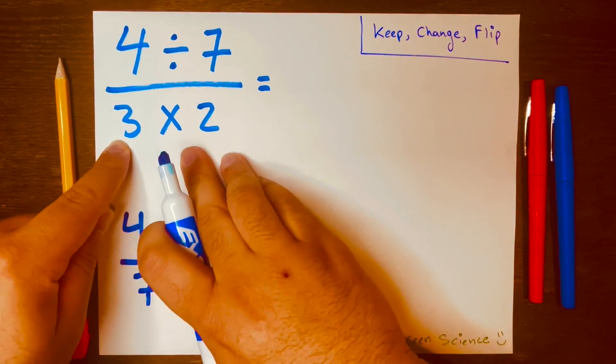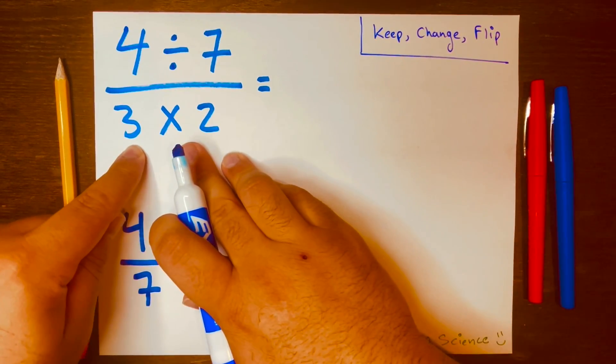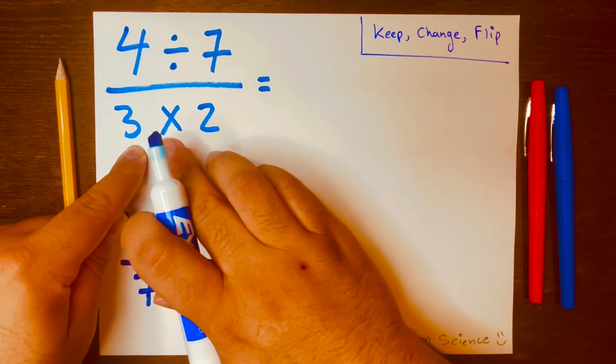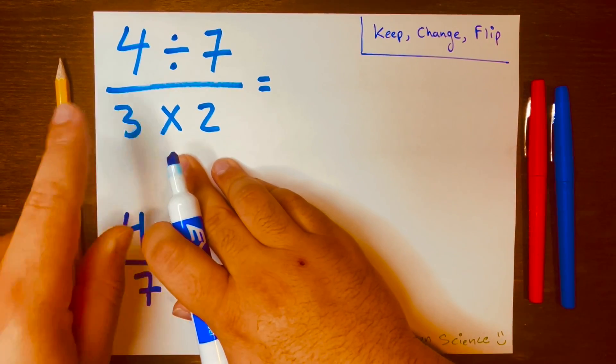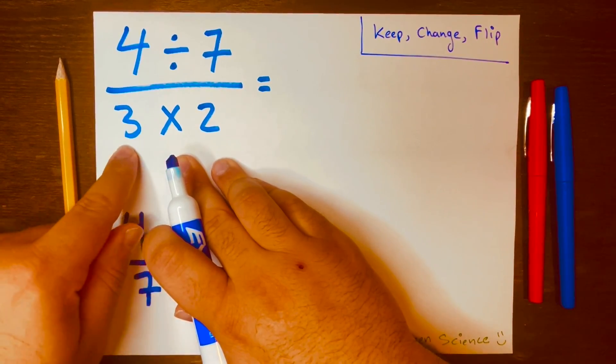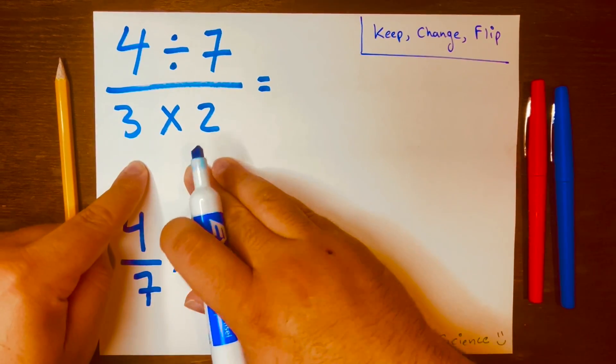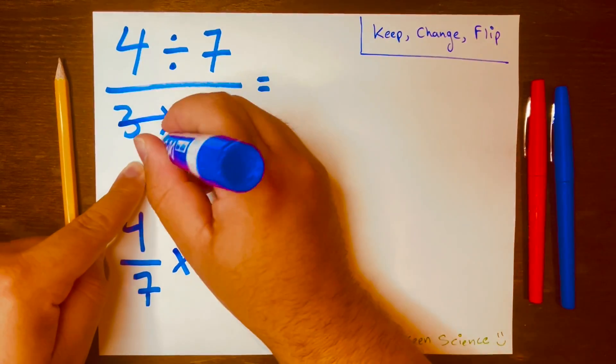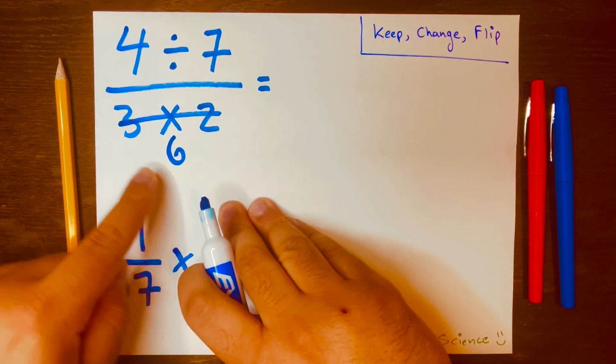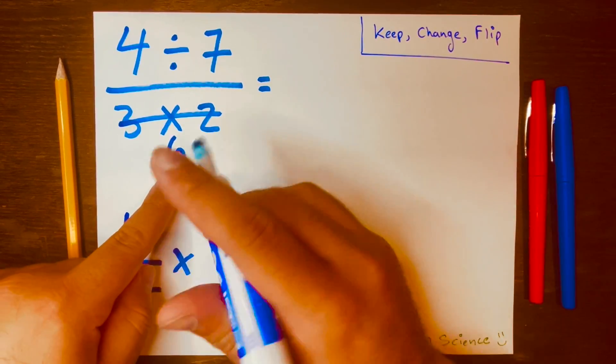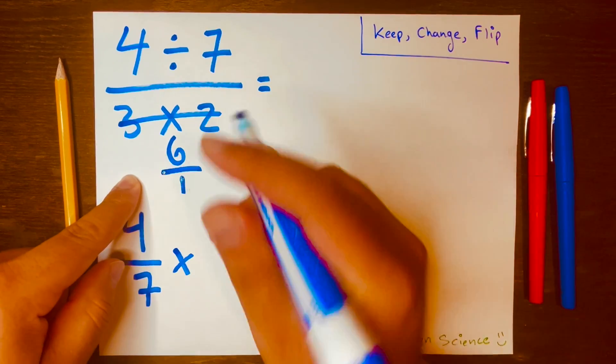And lastly, we want to flip the fraction. However, we don't have a fraction here. We need to make a fraction. So let's go ahead and solve this problem. 3 times 2 is 6, so we get 6. And then we want to turn this 6 into a fraction, so 6 over 1.